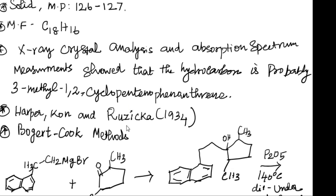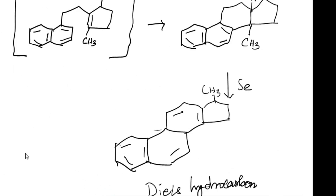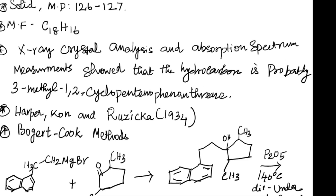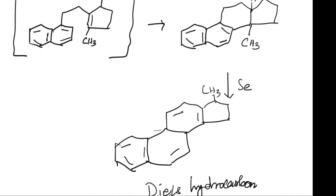Its structure was definitively established by synthesis by Haworth, Cook, and Riegel in 1934, using methods starting from 2-(1-naphthyl)methyl ethyl magnesium bromide and 2,5-dimethylcyclopentanone as starting materials. The formation of Diels hydrocarbon is achieved after selenium distillation to obtain the final product.